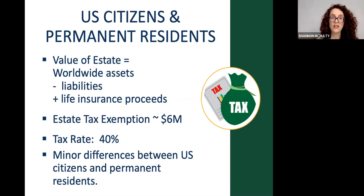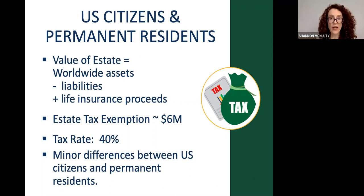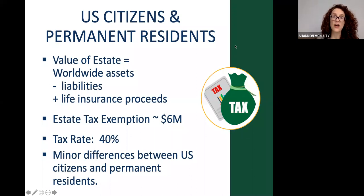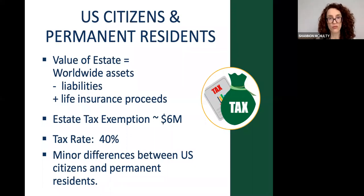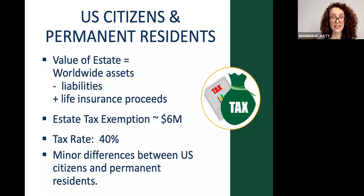A lot of people won't be subject to the estate tax, but make sure you include life insurance proceeds — especially for families with young children, that's often what pushes the estate over the threshold. The tax rate is 40% on anything over the $6 million exemption. For New York State the rate is lower, but it applies to your entire estate, which can sometimes result in a higher state tax than federal. There are minor differences between citizens and permanent residents, but generally these rules apply. And even if you are subject to estate tax, there are planning options to minimize it.